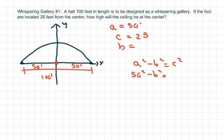So basically what I get is B squared equals 1875. So B is the square root of that—we're going to take the plus—that's going to be approximately 43.3.